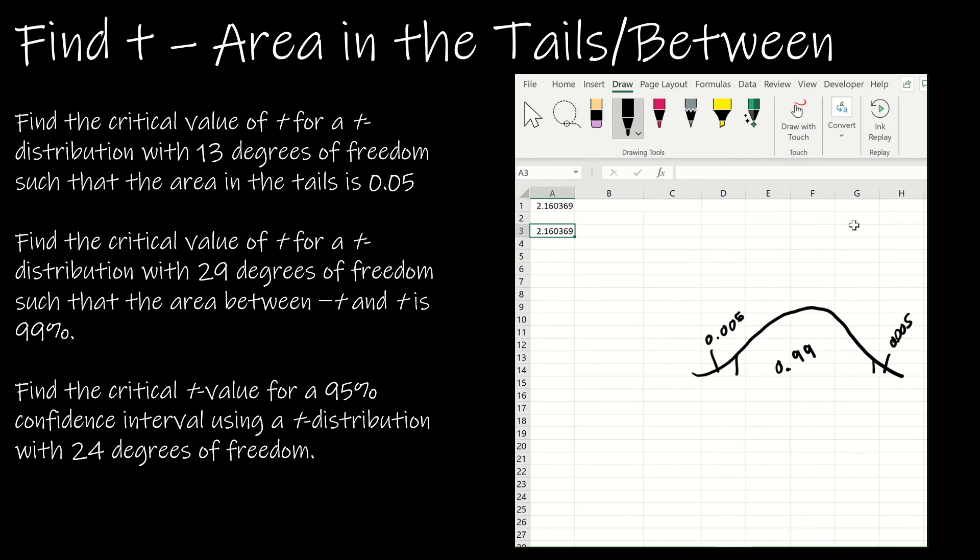I can either look at t inverse of the probability, which would be 0.995 comma 29 degrees of freedom, or I can say t inverse 2 tail, and then just give them the 0.01. So I would have to subtract 99% from 1 to get 0.01, and the degrees of freedom would be 29.